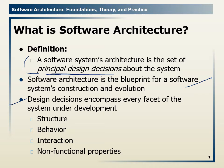Design decisions cover this entire system — we are going to address them all. Looking at the different aspects, the 5th one is implementation, which we have skipped here, but the rest are present: structure, behavior, interaction, and non-functional properties. The 5th one would be implementation.